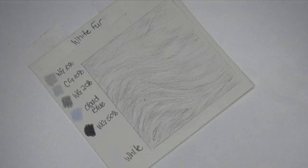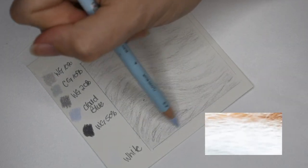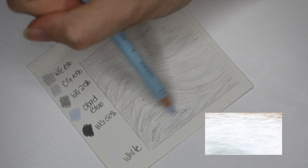After blocking in where I want the dark areas to be, I go in with cloud blue to add in cool tones that you can see in the reference photo.